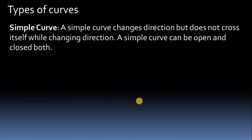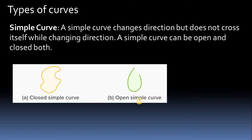Next is simple curve. A simple curve changes direction but doesn't cross itself while changing direction. A simple curve can be open or closed both. The key point is it doesn't cross itself. For example, if a curve crosses at a point, that is not a simple curve. A closed curve that doesn't cross itself is simple, and an open curve that doesn't cross itself is also simple.